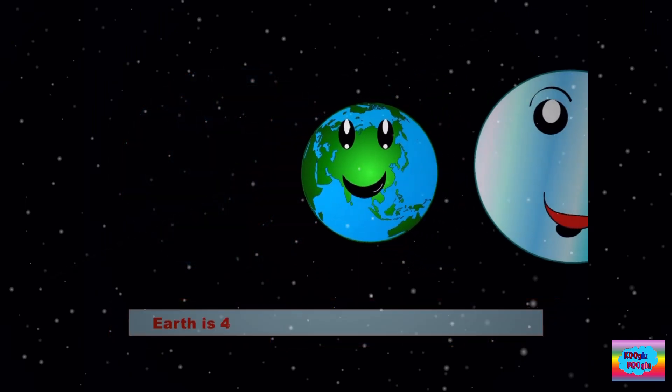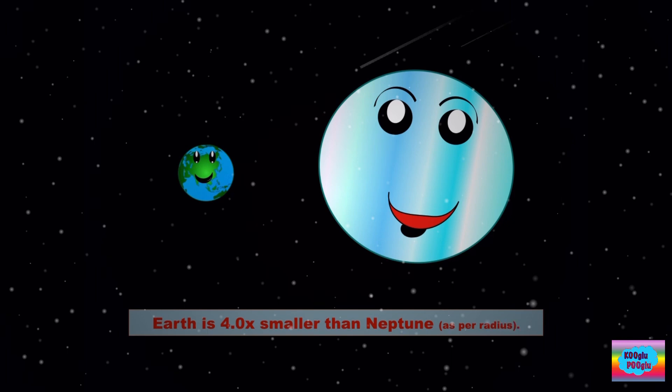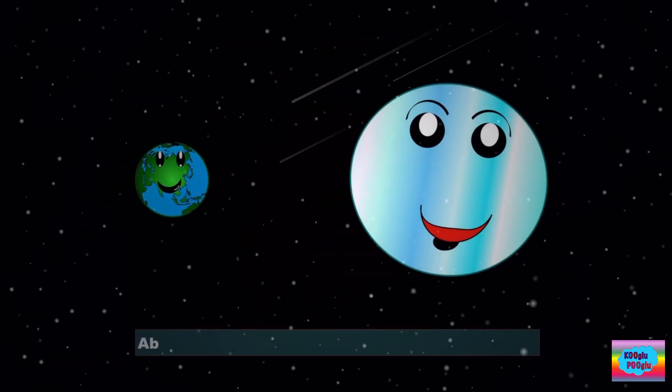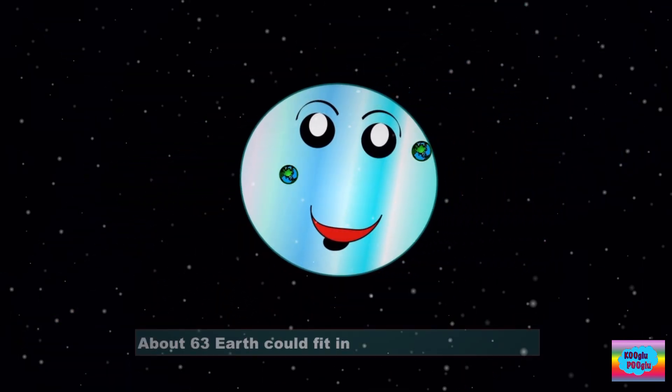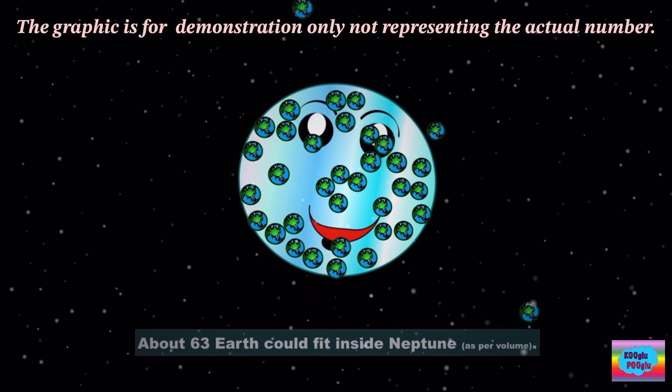Earth is 4 times smaller than Uranus. About 63 Earths could fit inside Uranus. That's a lot of Earths.